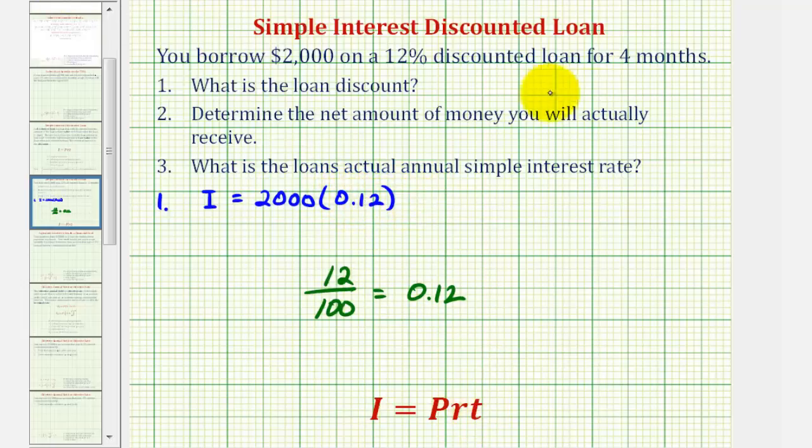So we have times 0.12 times T, which is time in years. Notice how the time is four months. Well four months would be four twelfths of a year, which would simplify to one-third if we want. So this product will give us our loan discount.